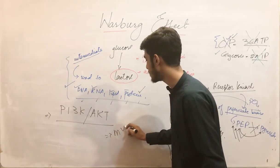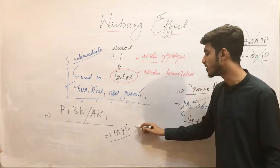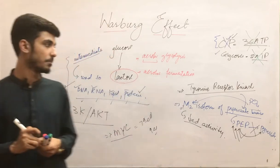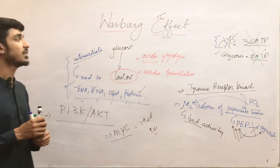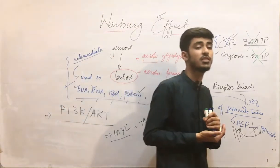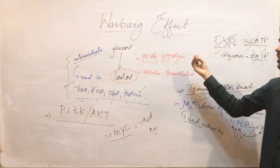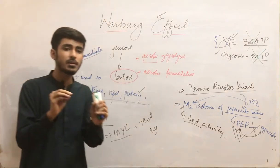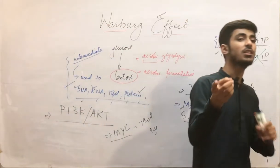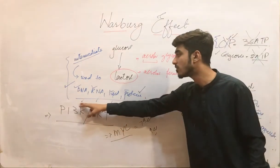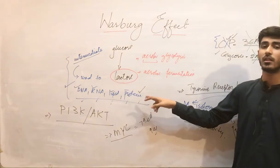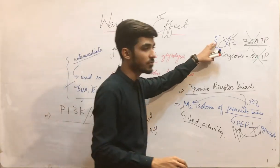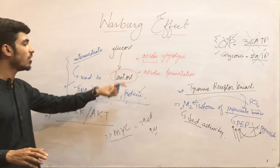We also have the MYC gene, which is a growth promoter gene that increases the glycolytic pathway and increases the enzymes required in the glycolytic pathway. So this is the Warburg effect. In rapidly growing cells and tumor cells, they prefer to carry out glycolysis first because they have to produce their cellular components, which are more important than ATP. That's why they carry out glycolysis and do not carry out oxidative phosphorylation. This is all about the Warburg effect.